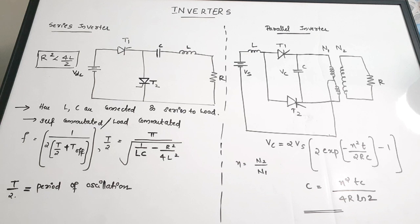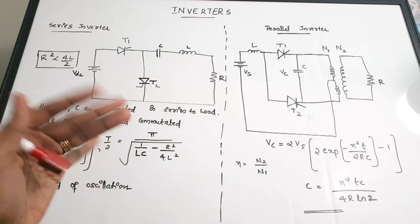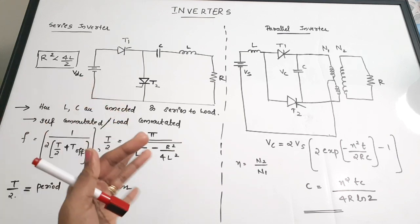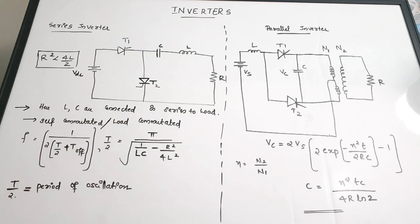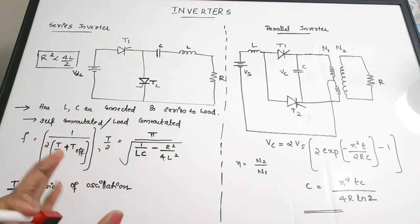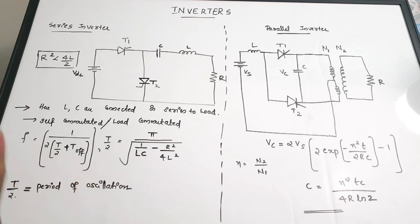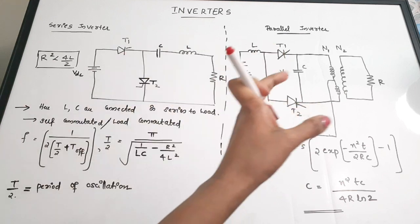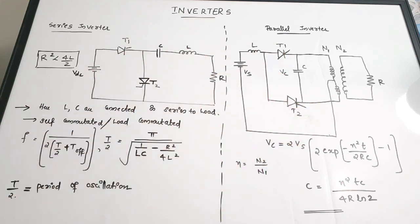Inverters are basically devices used for converting DC to AC voltage. We generally use inverters at home as well. The purpose is to generate alternating current. The basic types we are going to see first are the series and parallel inverter.